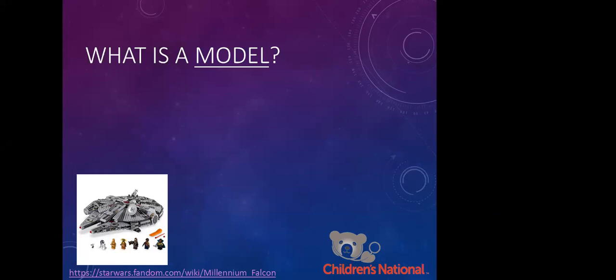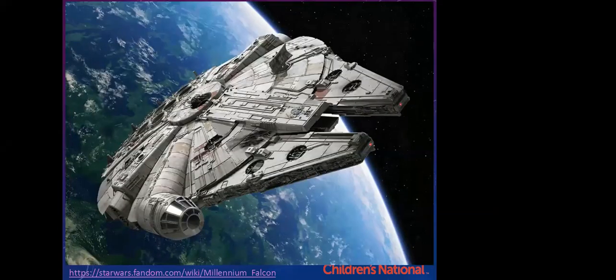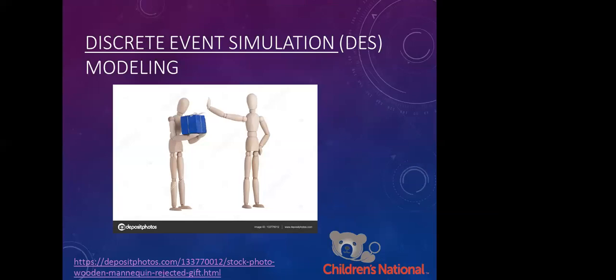A model would be like a smaller representation of something that's bigger. Yeah, perfect. It's a simplified representation of a complex system or object. And it can be physical, mathematical, which is what I like, descriptive. Importantly, a model does not have to be built to represent an object that currently exists. It can be an object or system that's imaginary, extinct, futuristic, contemporaneous.